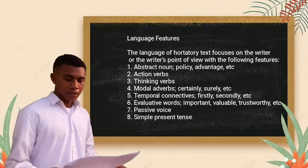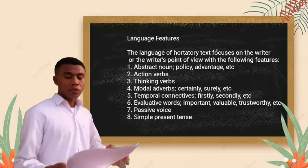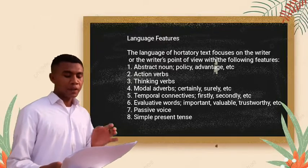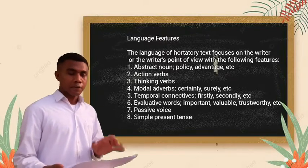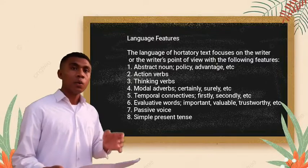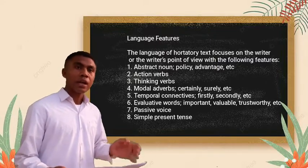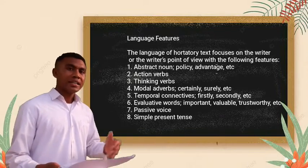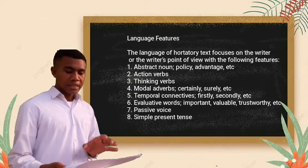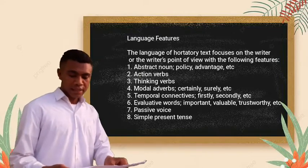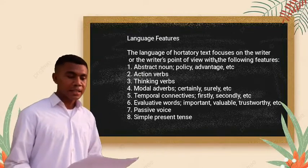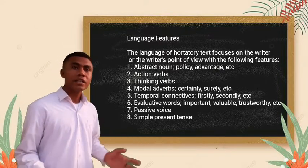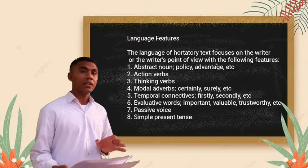The fourth feature is thinking verbs, which are always used in hortatory exposition writing. A thinking verb is a verb related to thinking activities — for example, think, worry, wonder, and so on. The fifth feature is temporal connectives, which are used in this kind of writing to relate to time — for example, firstly, secondly, and others.